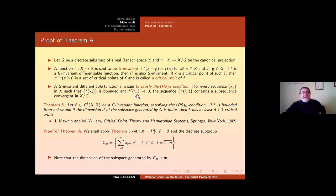So if x is a critical point of such f, then we have a lot of other critical points. And these are, for a critical point x, π^{-1}(π(x)). To see this, π(x) as a subset of X, this is a set of critical points. So this set of critical points in X is called a critical orbit of f. A G invariant differentiable function is said to satisfy the Palais-Smale G condition if for every sequence x_n in X such that f(x_n) is bounded and f'(x_n) converges to zero, the sequence π(x_n) contains a subsequence convergent in the quotient group X/G.